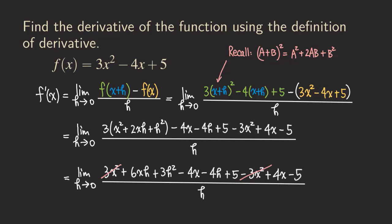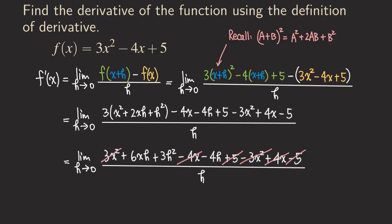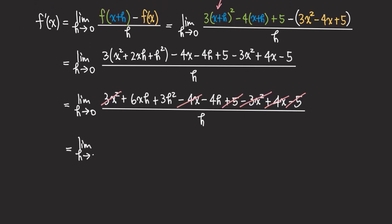The positive five and negative five cancel. What else do we have? We still have six xh plus three h squared and minus four h, and nothing else can be canceled or combined. So we have six xh plus three h squared minus four h in the numerator, and h in the denominator. Since plugging h in gives zero over zero, we can factor out the h and then cancel it.